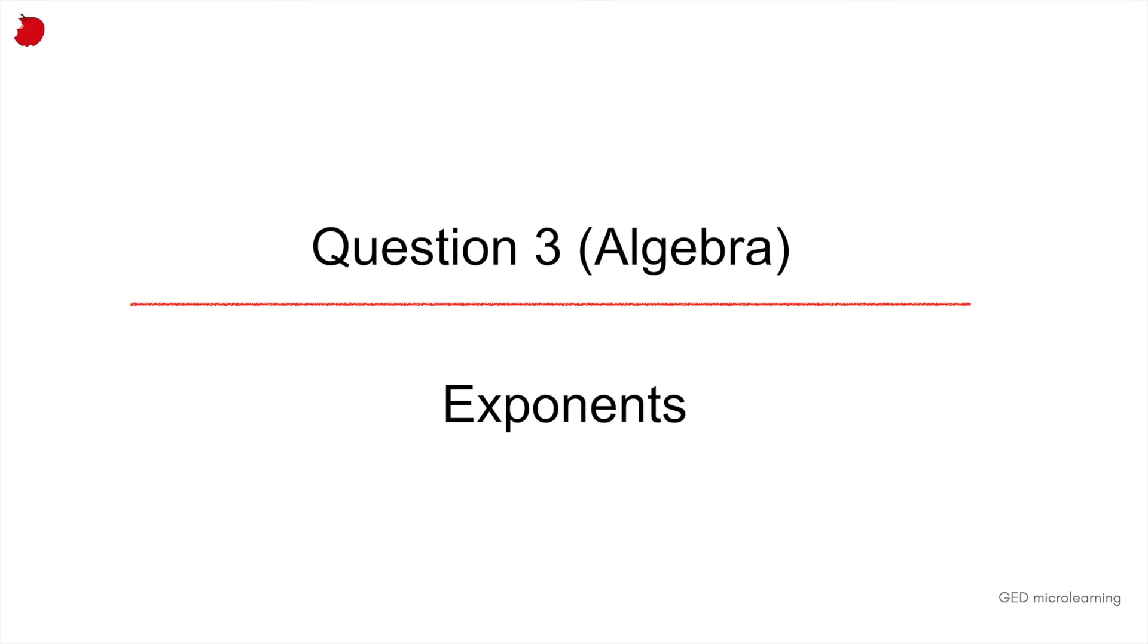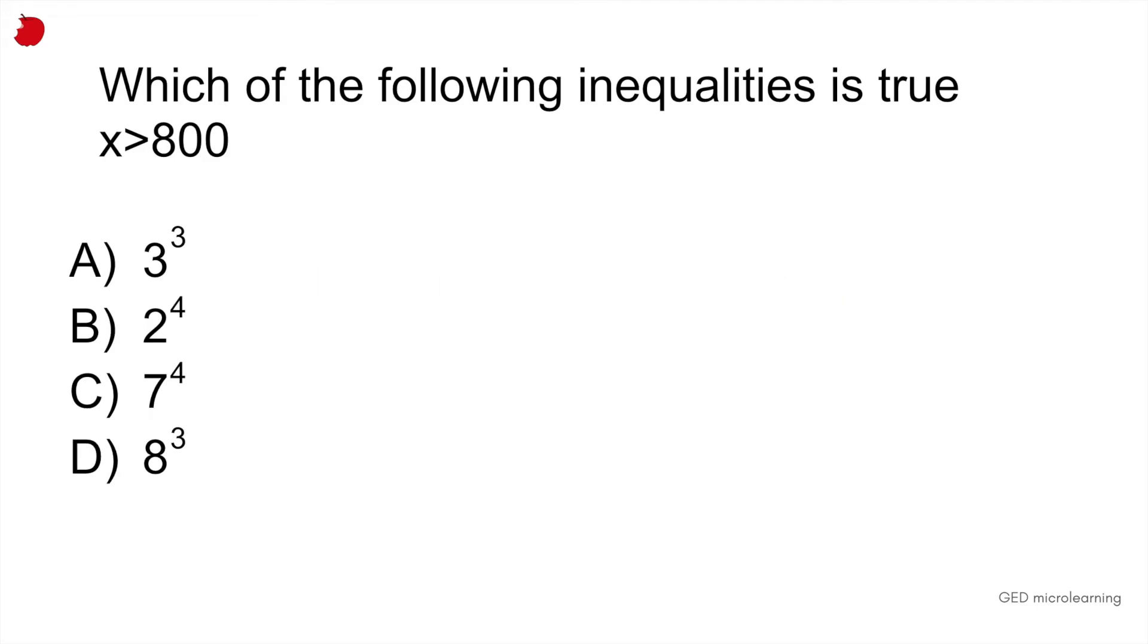So the next question is an exponents question. Which of the following inequalities is true? x is more than 800. And they're giving you in the answers the possible values for x. So a is 3 raised to the 3rd power, b is 2 to the 4th, c is 7 to the 4th power, and d is 8 to the 3rd power. And here all you have to do is basically solve for these exponents.